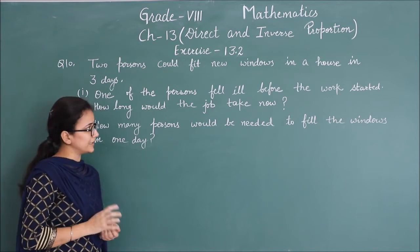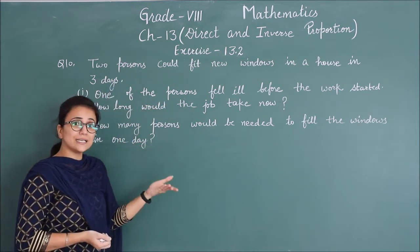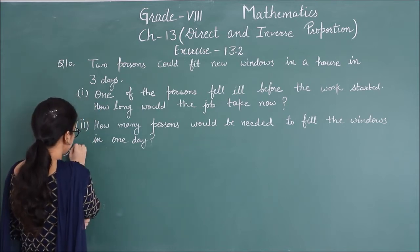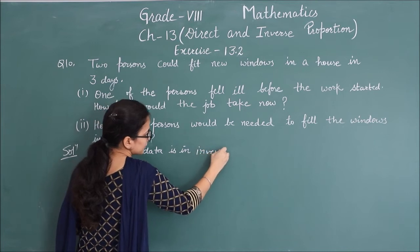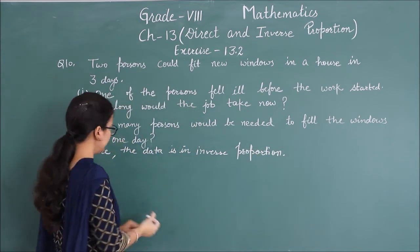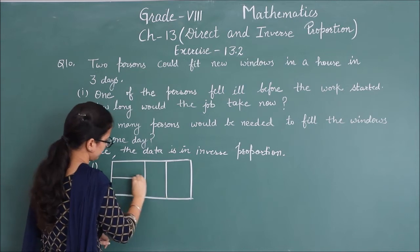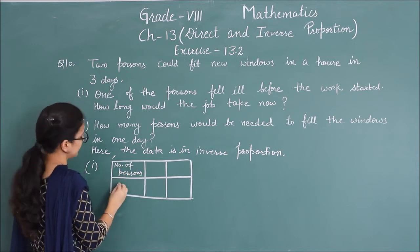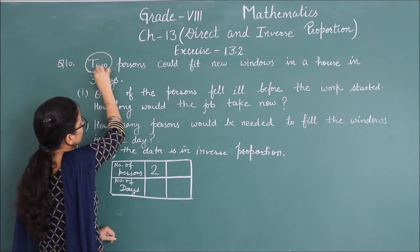Part 2 asks: how many persons would be needed to fit the windows in one day? When 2 persons were working, it took 3 days. Now one person is gone, so the number of persons decreased and number of days will increase — this implies inverse proportion. Here the data is in inverse proportion. Let us make a table with number of persons and number of days. When number of persons = 2, days = 3.